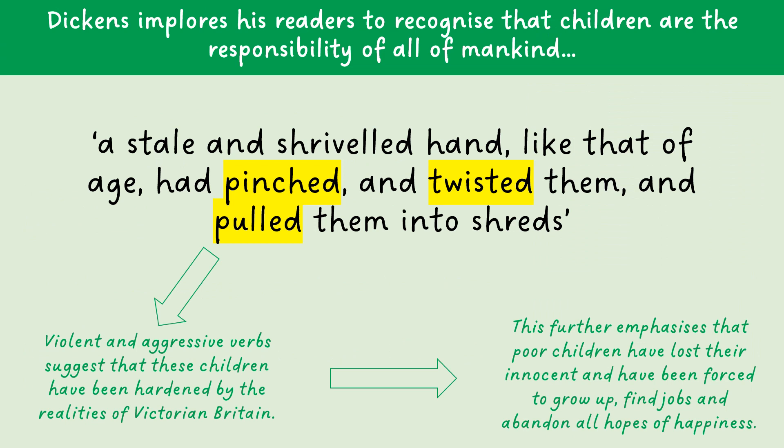It is interesting that Dickens uses children to represent Ignorance and Want. If we look at this quote, we can see that Dickens is imploring his readers to recognise that children are the responsibility of all of mankind. We have the fact that a stale and shrivelled hand, like that of age, had pinched and twisted them and pulled them into shreds. You could focus on the lack of identity — Dickens isn't taking his time to name these children. He's given them a blanket name of Ignorance and a blanket name of Want because all of the poor are experiencing this.